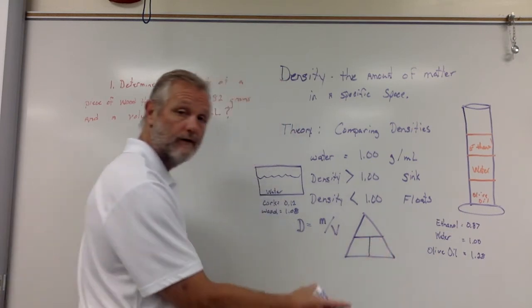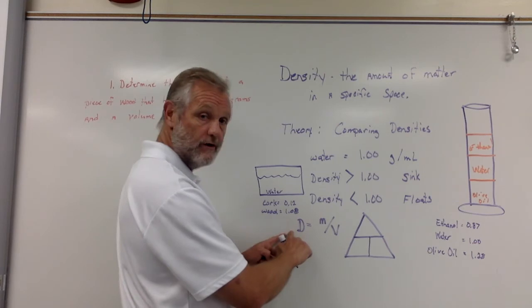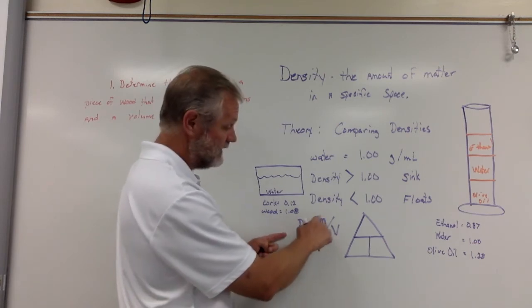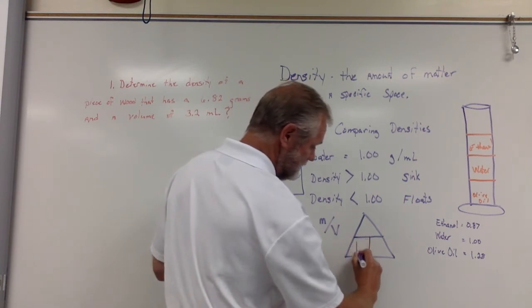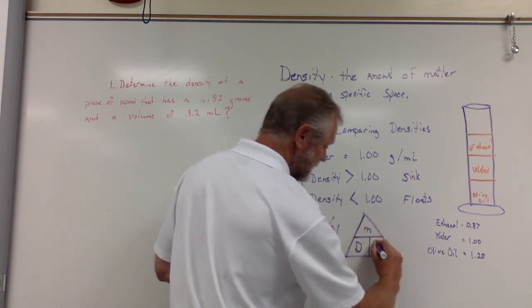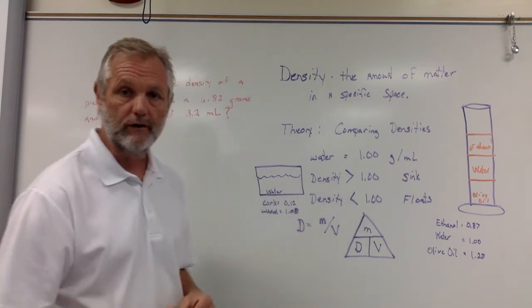And guys, you're going to hear me refer to this as the density triangle. So whatever you have, density is equal to mass over volume. So I would put my D right here, my mass, and my volume right there. You say, well, what'd you do?